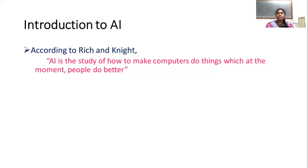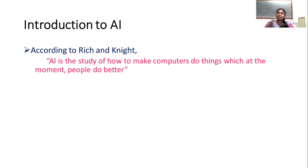Rich and Knight defined Artificial Intelligence as a study of how to make computers do things at which, at the moment, people do better. Humans are doing whatever they are doing, and in this study, we are making a computer or system do the same thing. That is Artificial Intelligence.